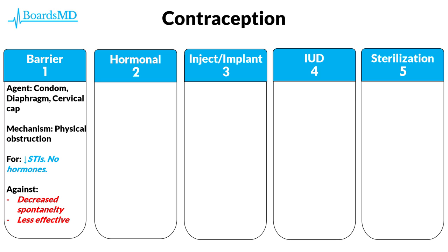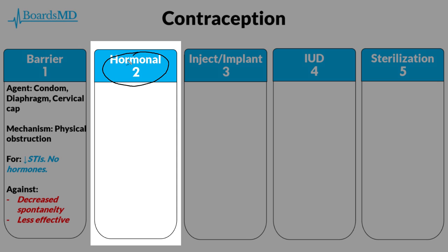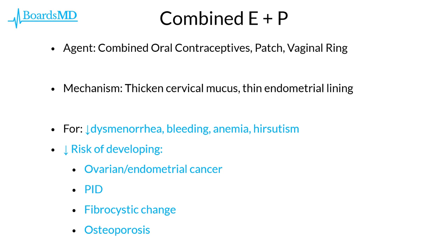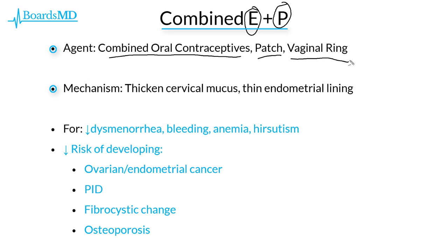Now that we've discussed barrier contraceptives in detail, we will move on to hormonal methods of contraception. These include those which utilize estrogen and progesterone together as well as those which utilize only progesterone. We begin with combined hormonal contraceptives. Options include the most common, combined oral contraceptives, as well as a patch and a vaginal ring. The major mechanisms of these agents are to thicken cervical mucus — preventing sperm from passing into the uterine cavity — and to thin the endometrial lining, both primarily mediated by the progesterone within these agents.